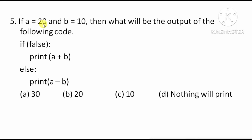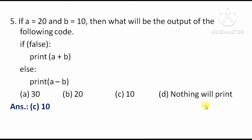Here, a value is 20 and b value is 10. The condition is false, so that block will not run. Then a minus b is calculated, which means 10. So the answer will be 10.